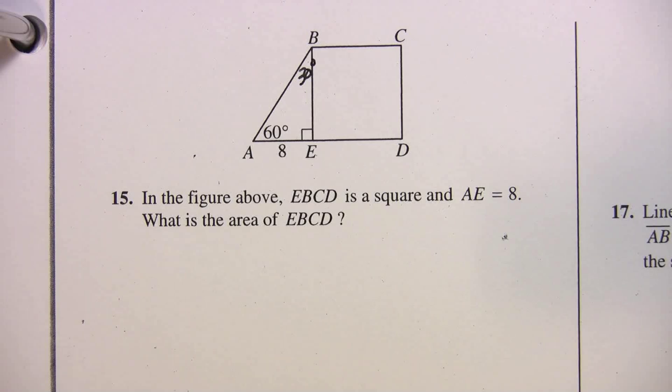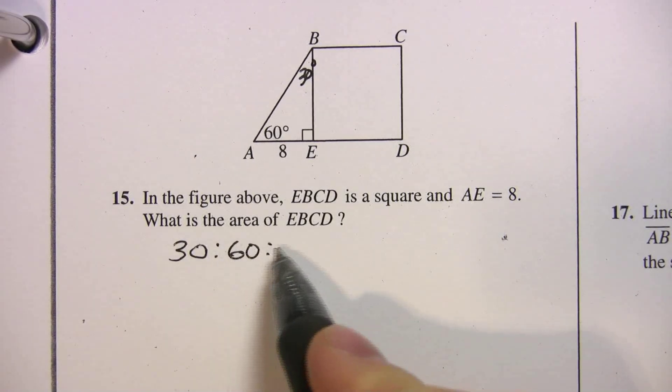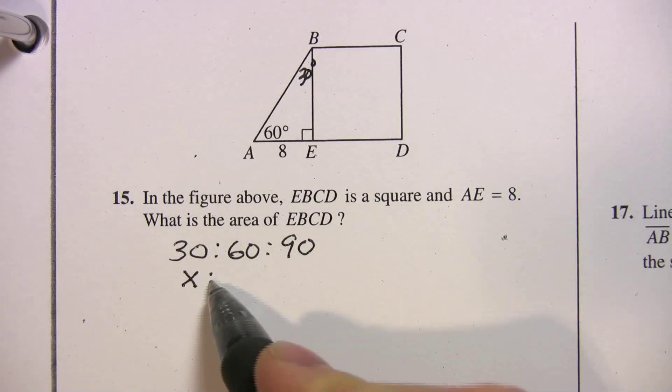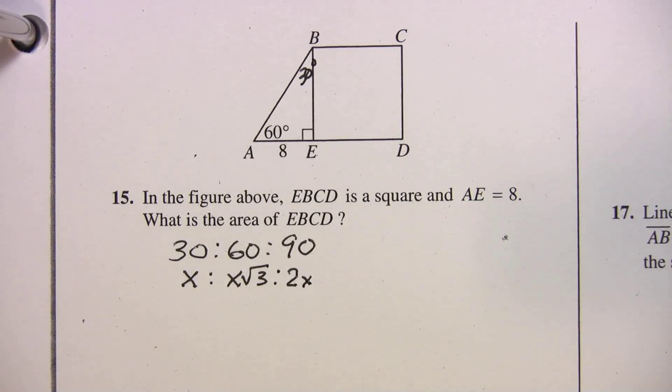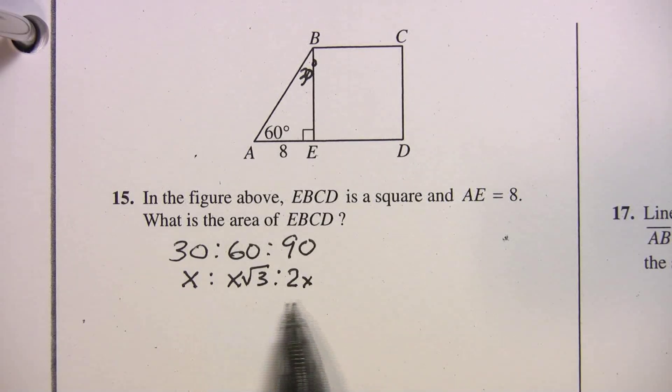Alright, when you get a 30-60-90, this is what you're going to write on your paper. 30-60-90. And the ratio is x to x radical 3 to 2x. That's in the beginning of the section, but I was never a big fan of having students flip back and forth and waste time. You really should know this. Try and memorize that.